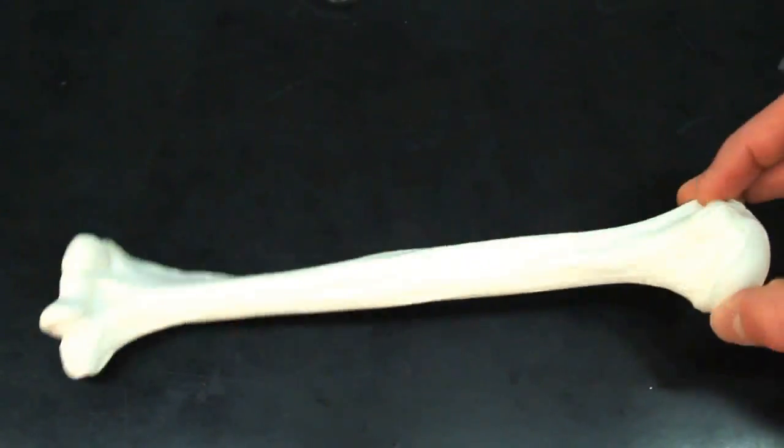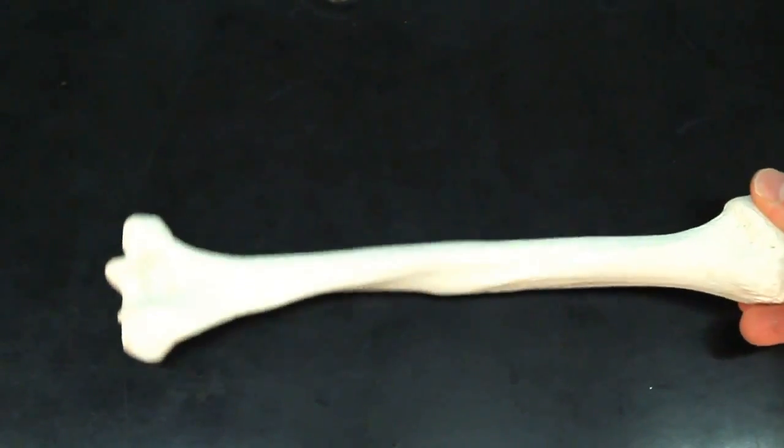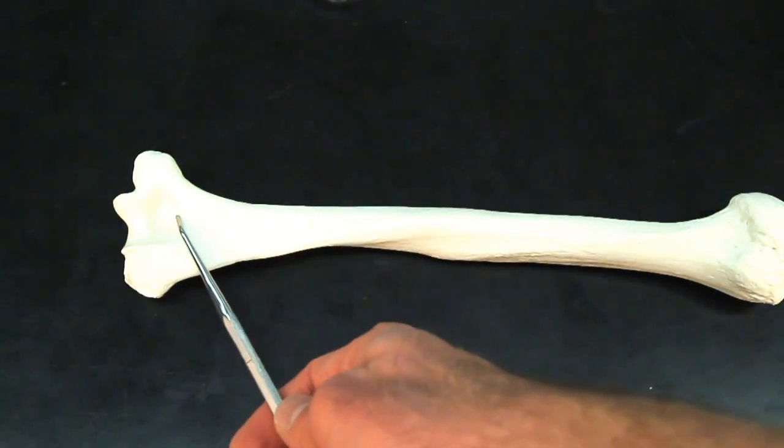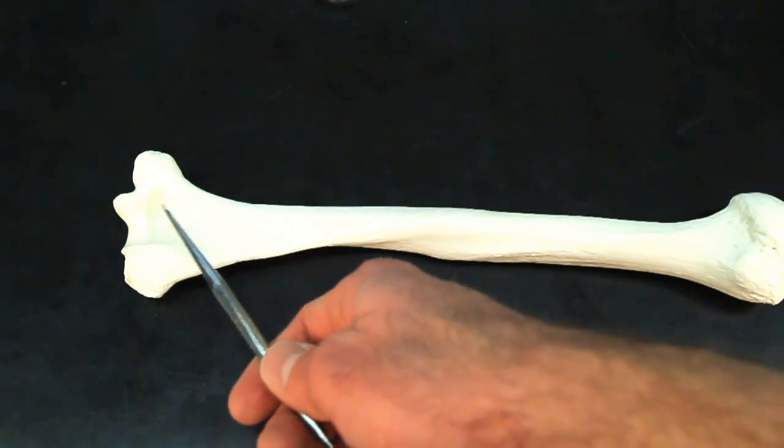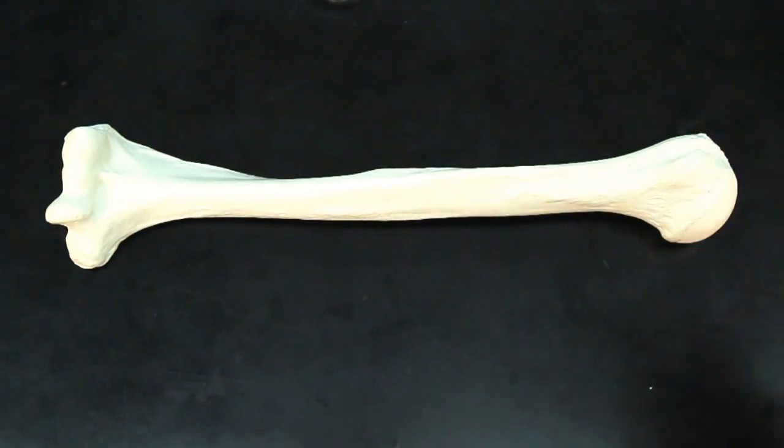The answer is, this is a right humerus. The last giveaway, the olecranon fossa must point posteriorly. It has to point towards the back. So, this is going to be your right humerus.